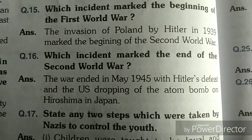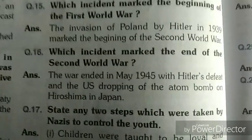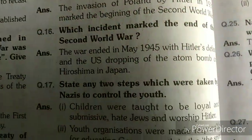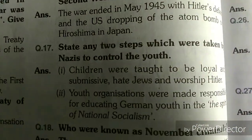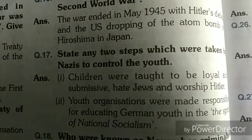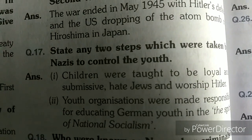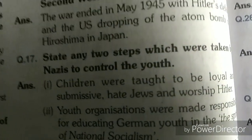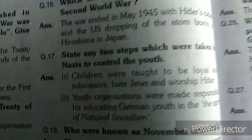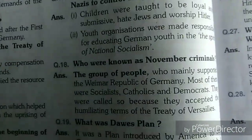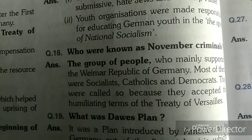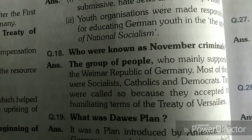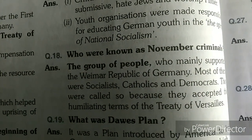What marked the end of the Second World War is also important. State any two steps which were taken by the Nazis to control the youth — these kinds of questions will generally come in long questions. Who were known as November criminals? This can also be asked.